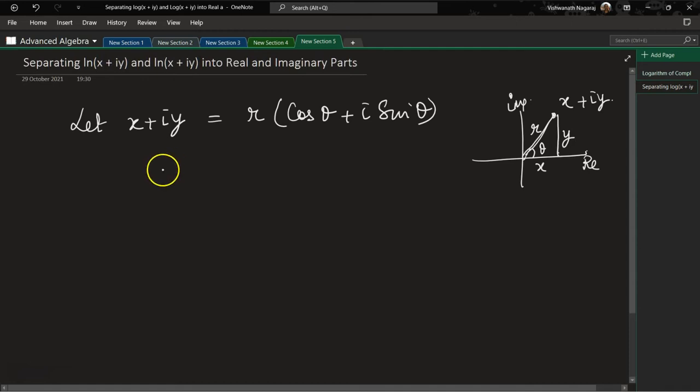So here r is going to be Pythagorean theorem because this is 90 degrees, so that would be √(x² + y²). cos θ is adjacent by hypotenuse, sin θ is opposite side by hypotenuse, y by r.